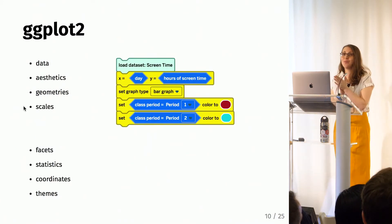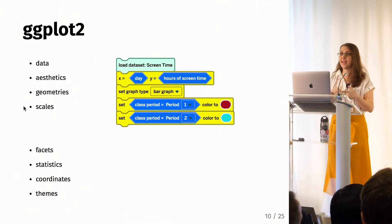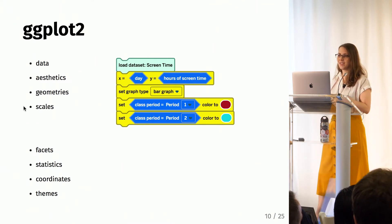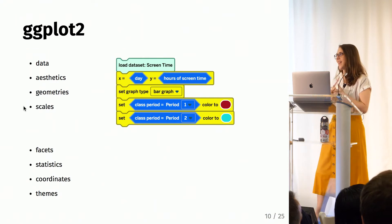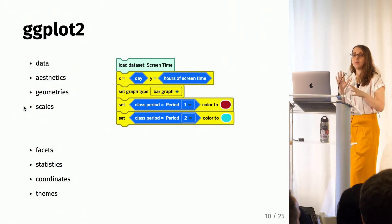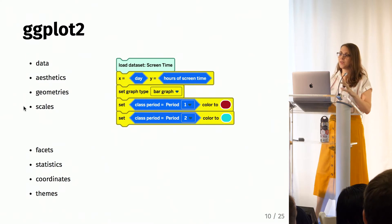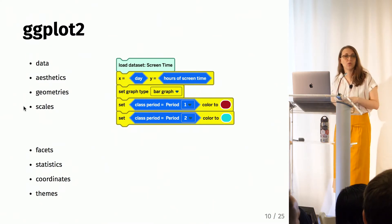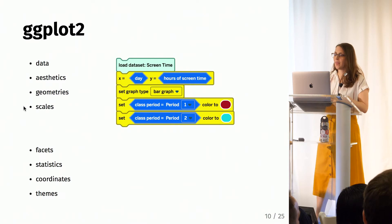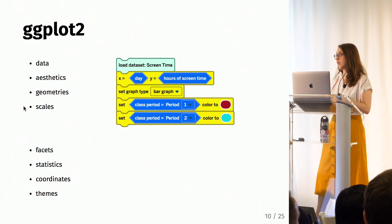Moving on to ggplot, which was inspired by the grammar of graphics by Leland Wilkinson — the general layers in a graphic are data, aesthetics, geometries, scales, facets, statistics, and coordinates. With our blocks, we also start with the data, then add aesthetics with X and Y variables, and then students can choose the geoms. Right now there are four possible graphs students can make. Students can also set color, but we haven't yet added the ability to facet, add statistics, different coordinate planes, or themes.